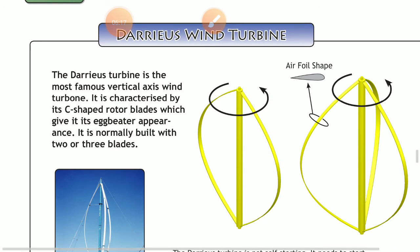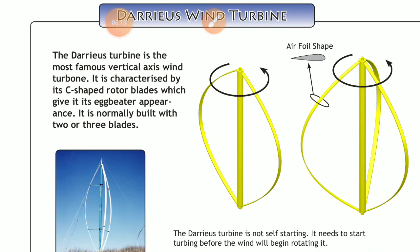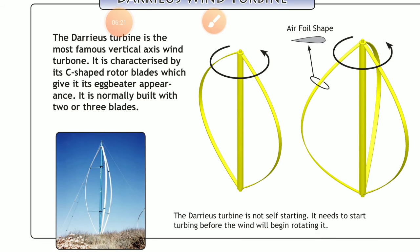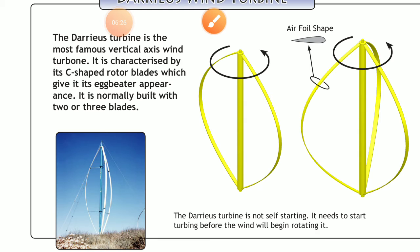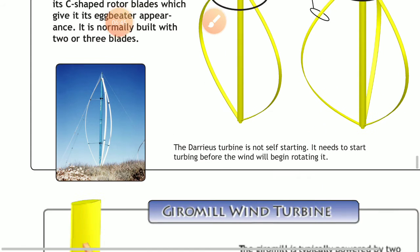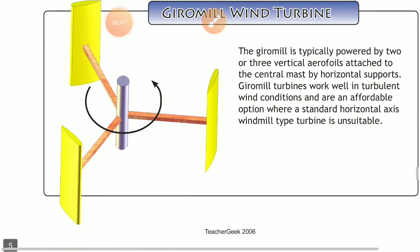The next vertical axis turbine is the Darrieus type turbine. The Darrieus type turbine is characterized by C-shaped rotor blades which give it the appearance of an eggbeater. It is built with two or three blades. It is not self-starting, so basically you need to use a motor. It then captures wind speed and provides rotational movement.